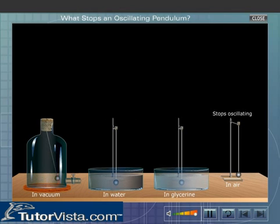We observe that the pendulum oscillating in glycerine quickly comes to rest, as glycerine is denser than water and air. But the pendulum oscillating in vacuum does not stop oscillating, as there is no medium to offer frictional resistance. This shows that the speed of oscillation depends on the density of the medium in which it is oscillating.